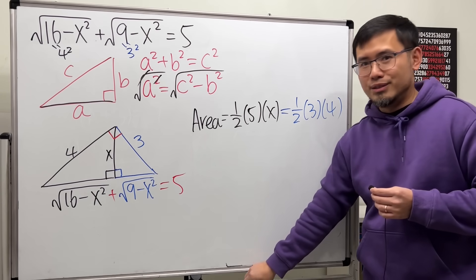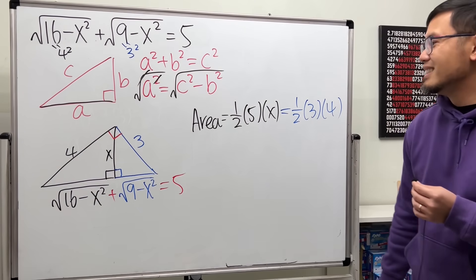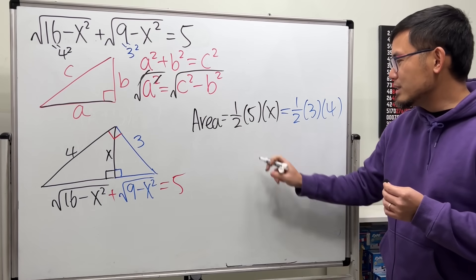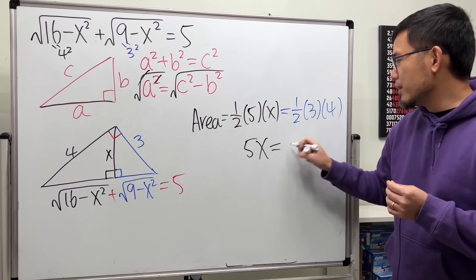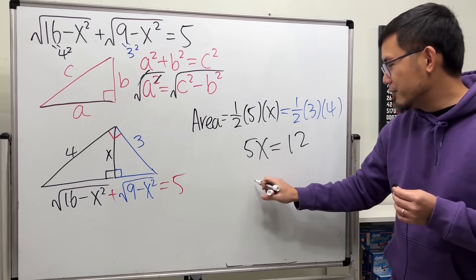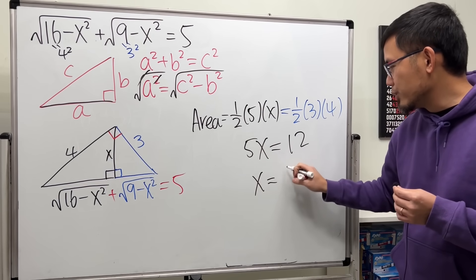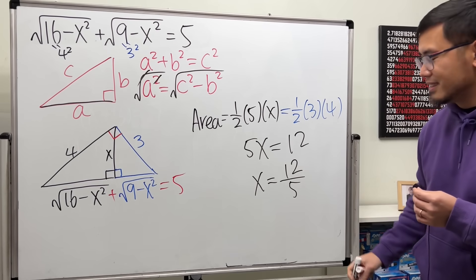Ah, just like this. Look at that. Cancel out the 1 half on both sides. We are looking at 5x equals 12. And then divide 5 on both sides, x is equal to 12 over 5. Done.